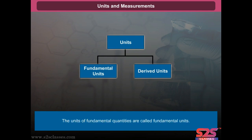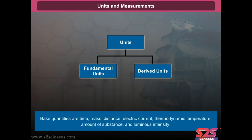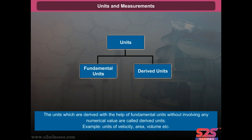The units of fundamental or base quantities are called fundamental units. Base quantities are time, mass, distance, electric current, thermodynamic temperature, amount of substance, and luminous intensity. The units which are derived from fundamental units without involving any numerical value are called derived units — for example, units of velocity, area, volume, etc.